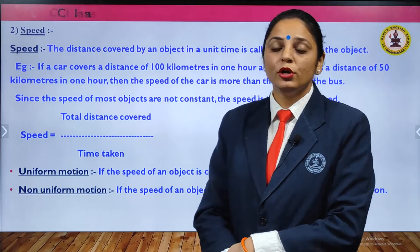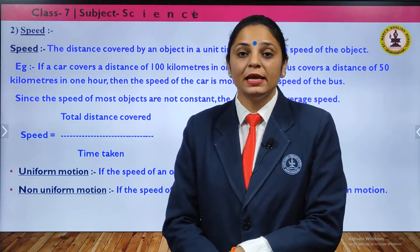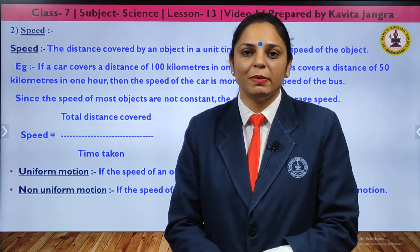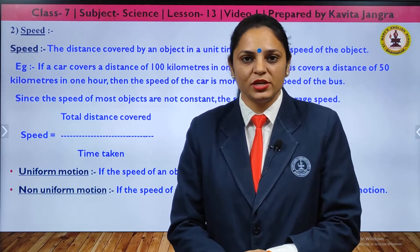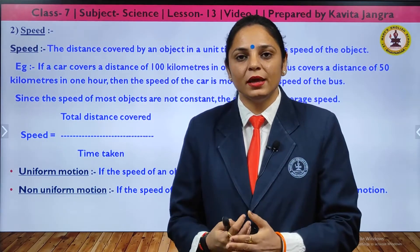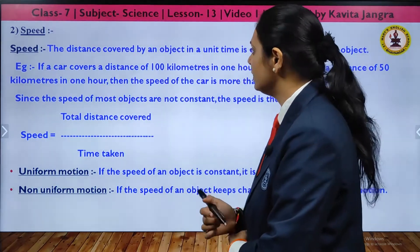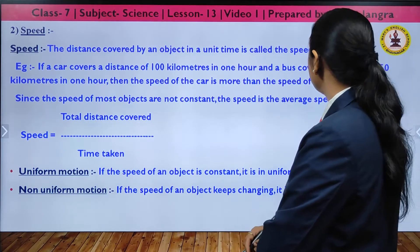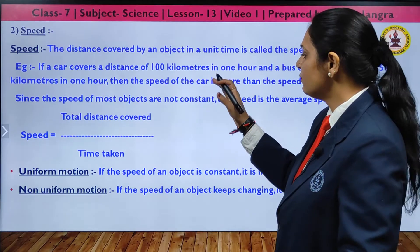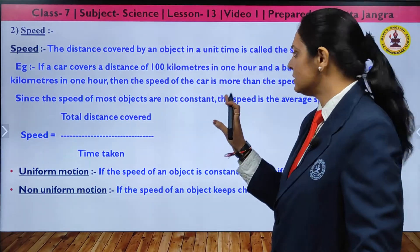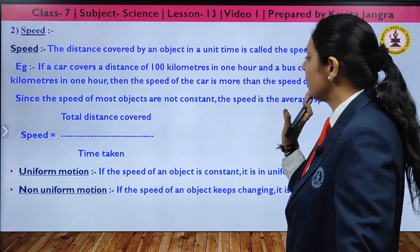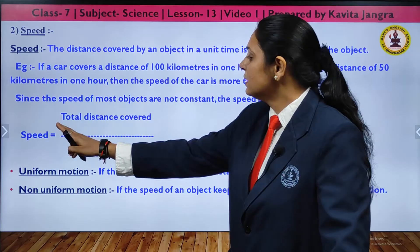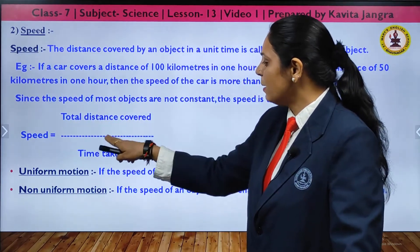Speed is the distance traveled within a given period of time — how much distance is covered by any object in the given time period. The distance covered by an object in a unit time is the speed of the object. For example, if a car covers 100 kilometers in one hour, you calculate speed using the formula: speed equals total distance covered divided by total time taken.